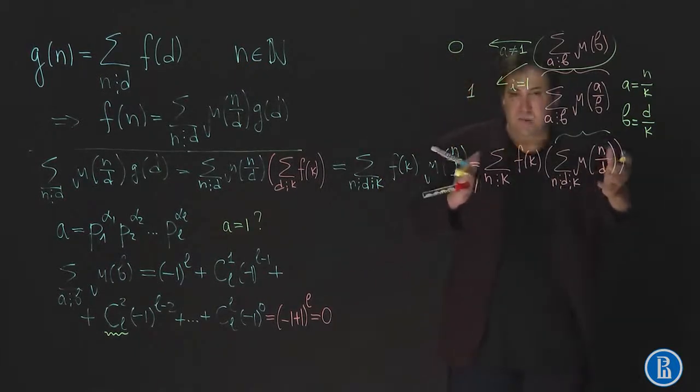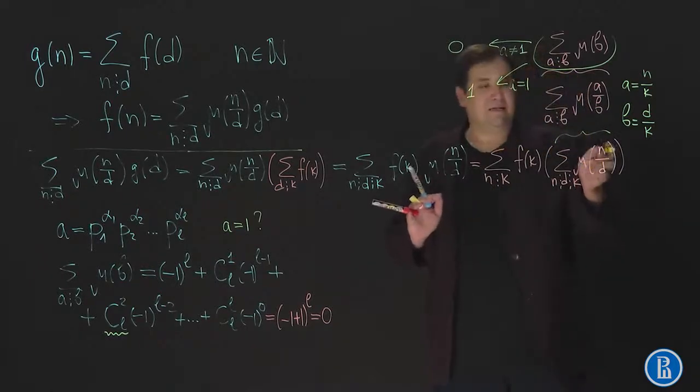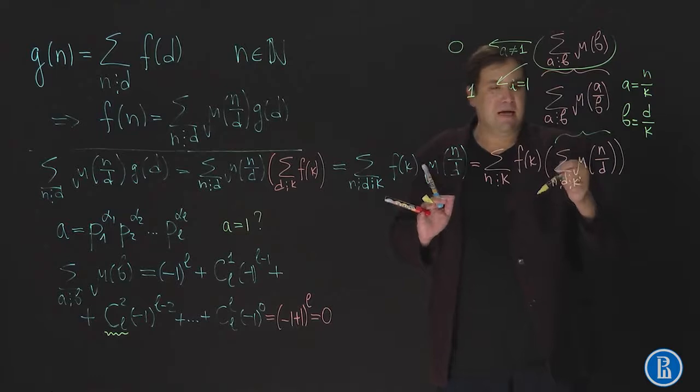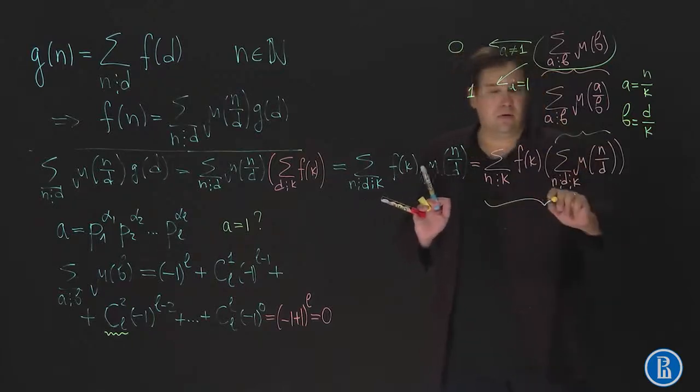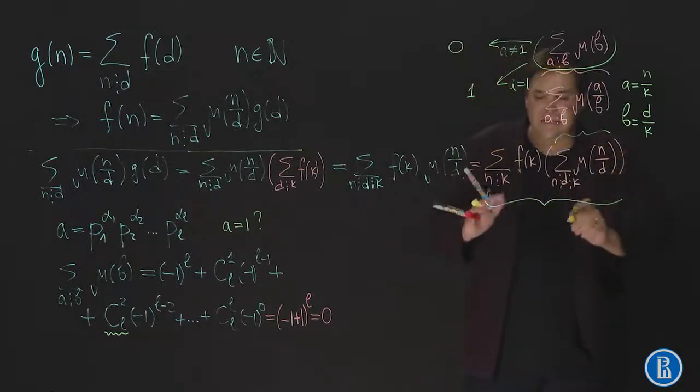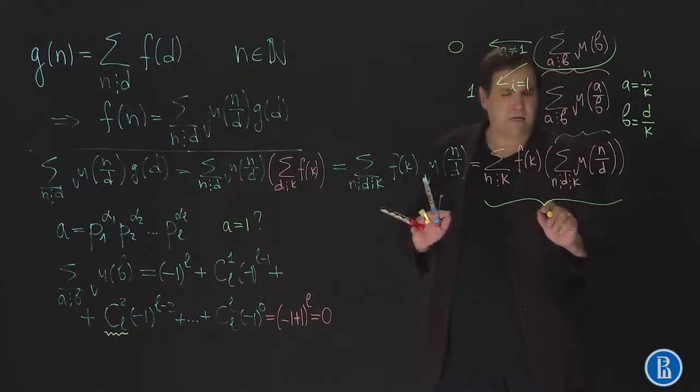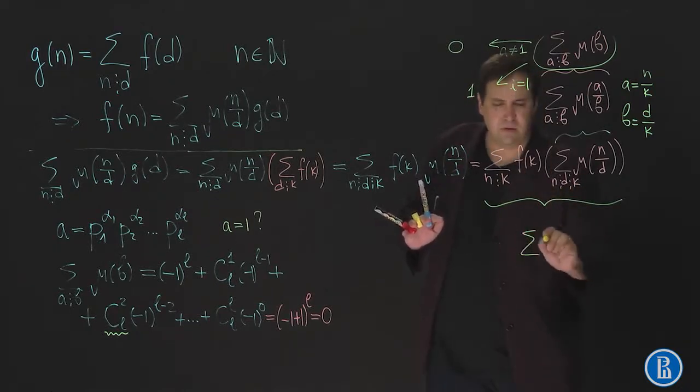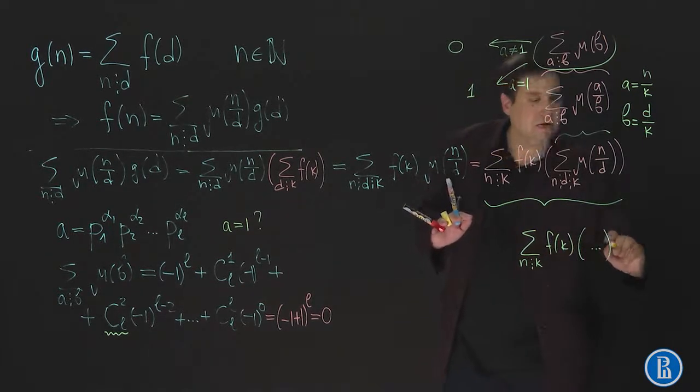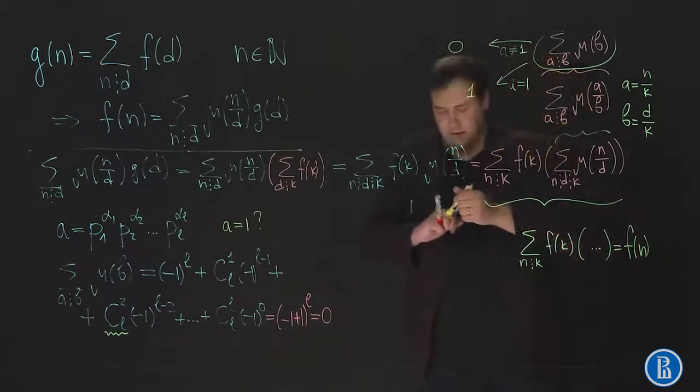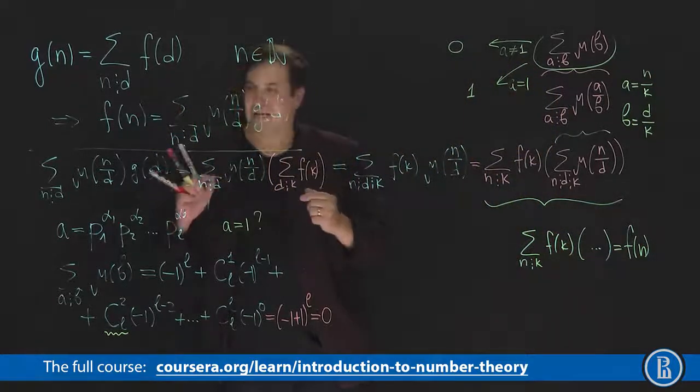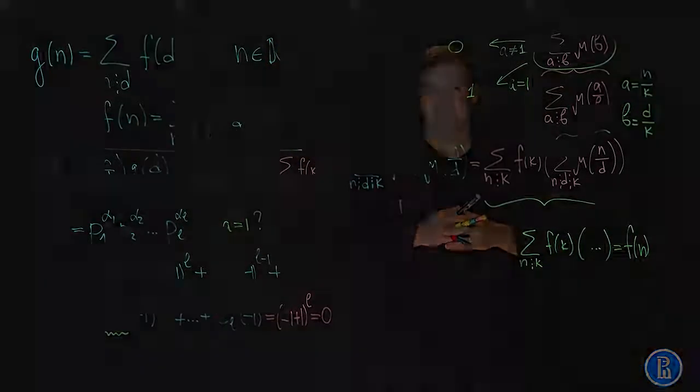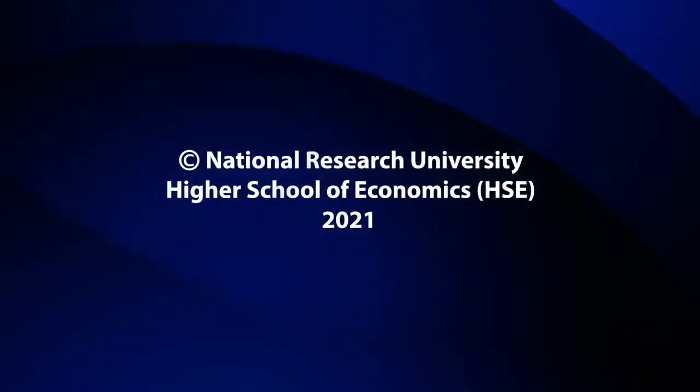Thus what is this sum, this expression equal to? When is this equal to 1? A should be equal to 1. And this means, what is A? This means that N should be equal to K. So, if N is equal to K, we can see that this sum will be equal to F of N. So this finishes the proof that the right hand side of Möbius inversion formula indeed gives us F of N.